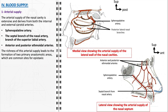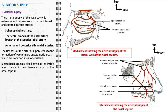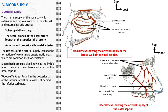Two notable anastomotic areas within this arterial system are key sites for epistaxis. Kiesselbach's plexus, also known as Little's area, located in the anteroinferior part of the nasal septum, is an arterial network formed by the anastomosis of the anterior ethmoidal, greater palatine, sphenopalatine, and superior labial arteries. This plexus is a common site for anterior nosebleeds due to its location and dense vascularization. Woodruff's area, located in the posterior part of the inferior lateral nasal wall just behind the inferior turbinate, involves the anastomosis of the sphenopalatine and pharyngeal arteries, and is particularly relevant in cases of posterior epistaxis.